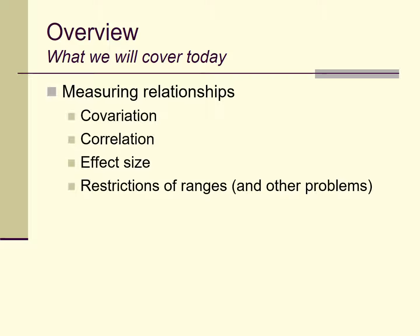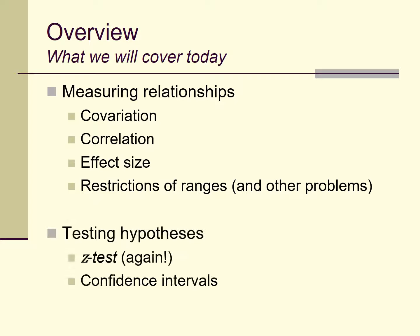Correlations are one of the ways we can measure relationships. I'll introduce them, but first introduce covariation, talk about correlation, effect sizes, and problems that can come up — particularly things like restriction of range. Towards the end of this lecture, I'll talk about hypothesis testing with correlations. We did some hypothesis testing in Unit 1 using confidence intervals around means, and now we're applying the same ideas to correlations.